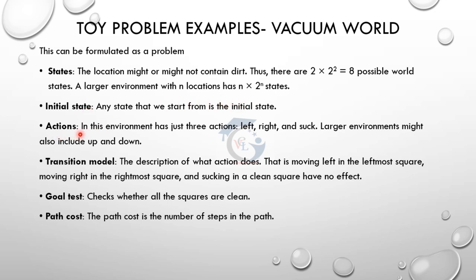Actions - what do we do? We can move to the left side or the right side. That is the movement action, and we also clean. The transition model describes the action order in detail. If the agent is on the left side and moves, it goes to the leftmost position. Then we clean.